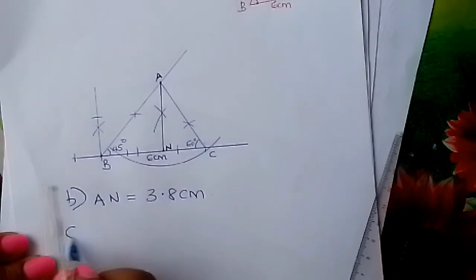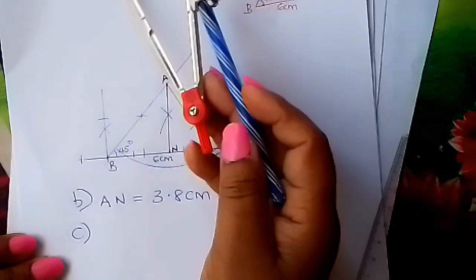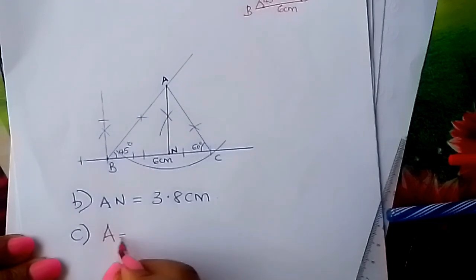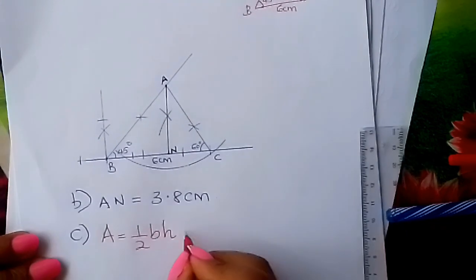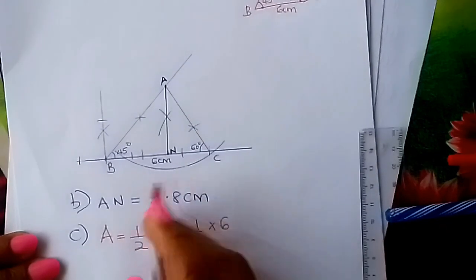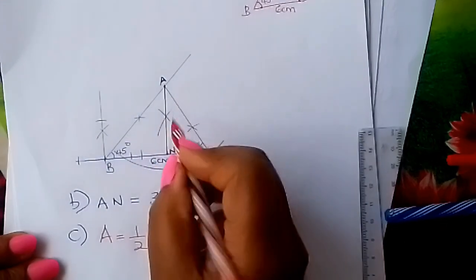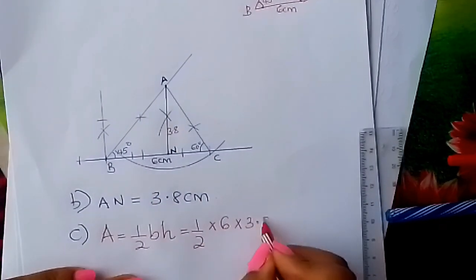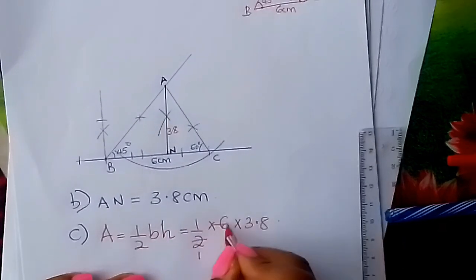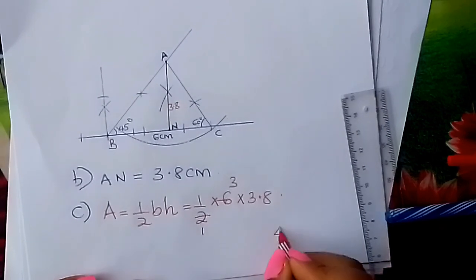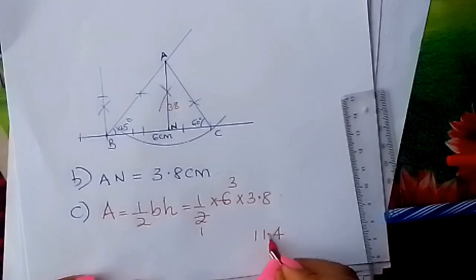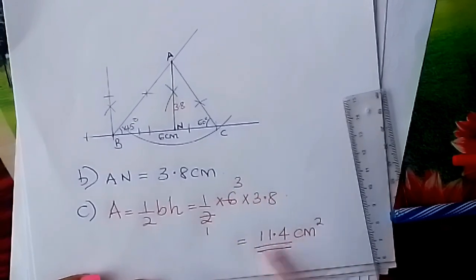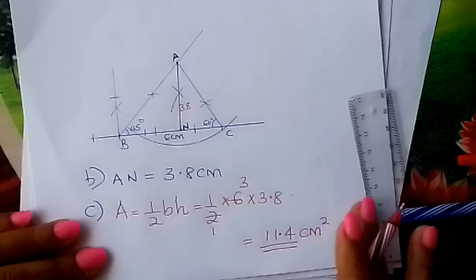Now go to part C, the last part: find the area of the triangle. Area of a triangle equals one-half times base times height, which equals one-half times 6 times 3.8. You can work this out with a calculator. Therefore, the area equals 11.4 centimeters squared.